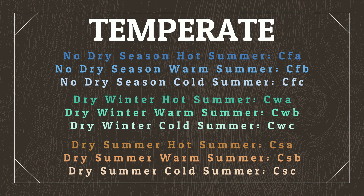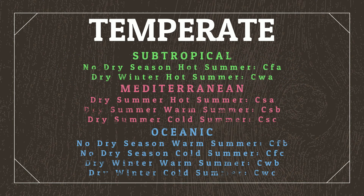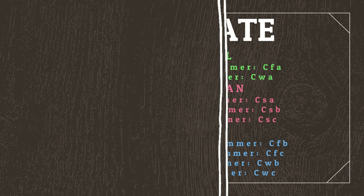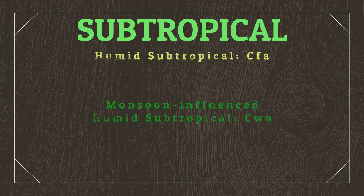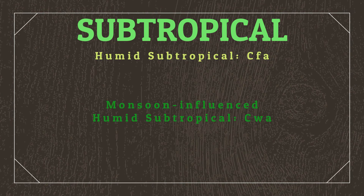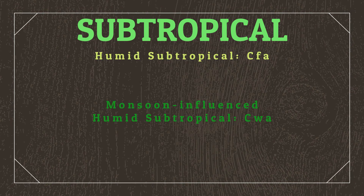The good news is that while there are nine unique climate zones, they fit neatly within three main climate categories: the subtropical climates, Mediterranean climates, and oceanic climates. So we'll only need to worry about placement for these three groups. The subtropical climates we're focusing on include two main climate zones: humid subtropical, and monsoon-influenced humid subtropical.